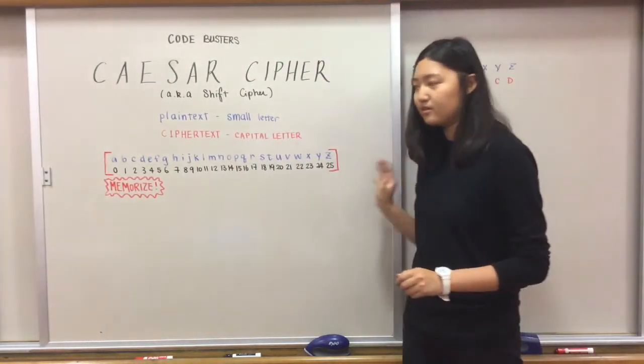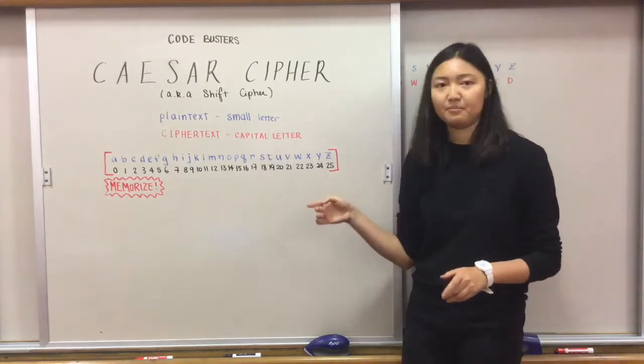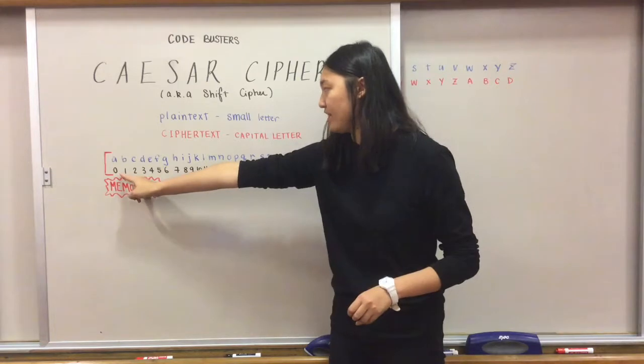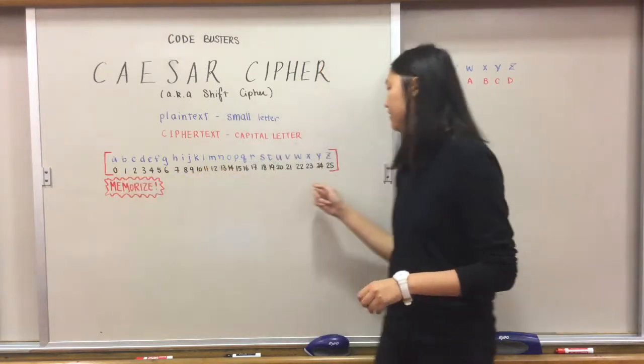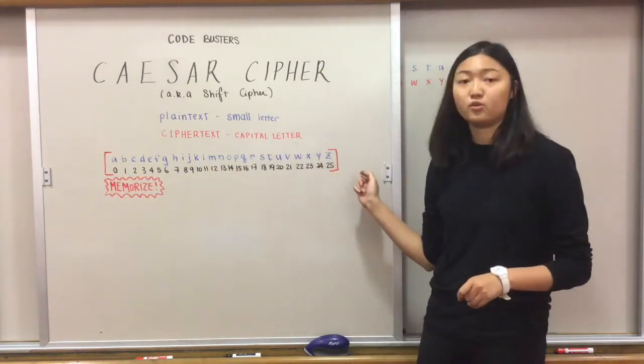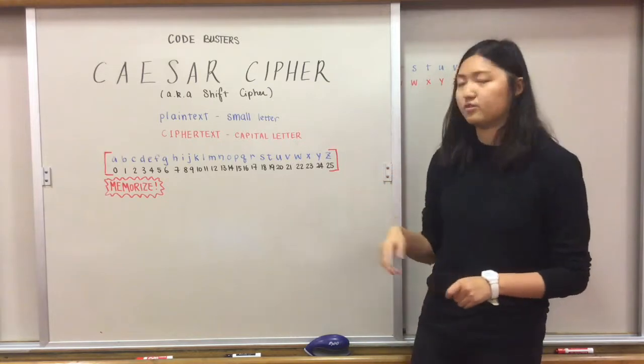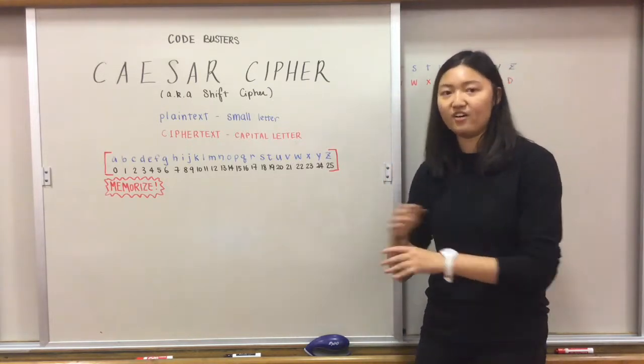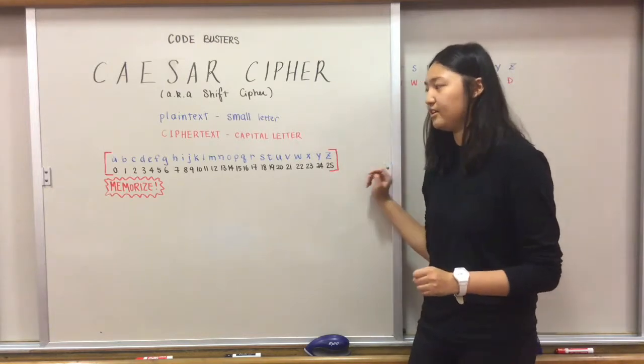Here is how we map each letter onto a number. Notice that we start counting A at zero and then we end at Z with 25. Now we can do some math with it instead of drawing out the entire alphabet.